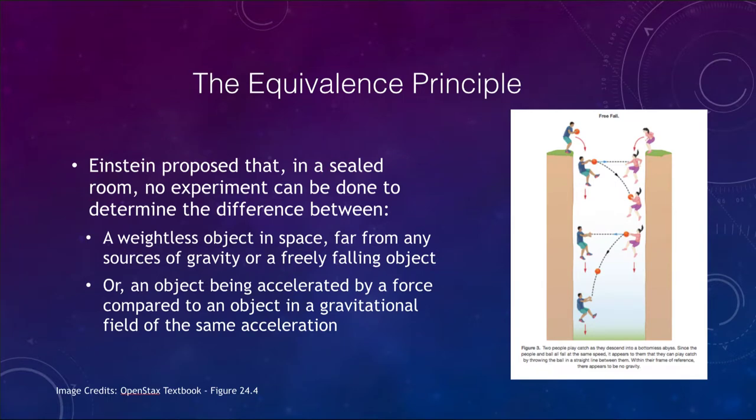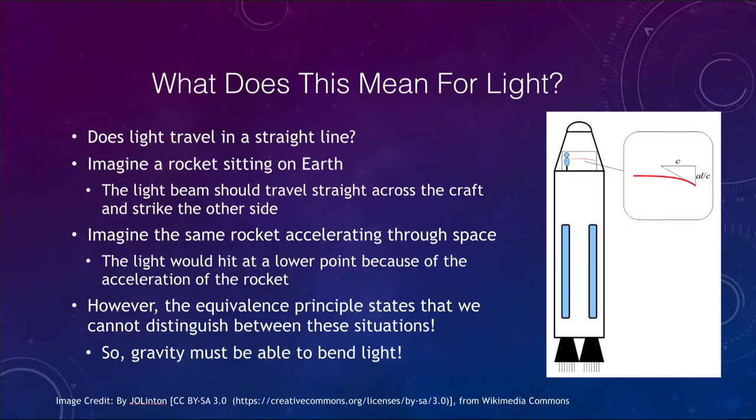Now, the important thing is what this means for light. So let's take a look at what it means for light. Does light travel in a straight line? We tend to think of light as traveling in a straight line, but this is not always the case. If we imagine a rocket sitting here on earth, the light beam should travel straight across the craft and strike the other side. So you would expect if you're shining a flashlight, that it will go straight across and strike the other side at the same level. Now, that makes perfect sense to us. But let's imagine the same rocket accelerating through space.